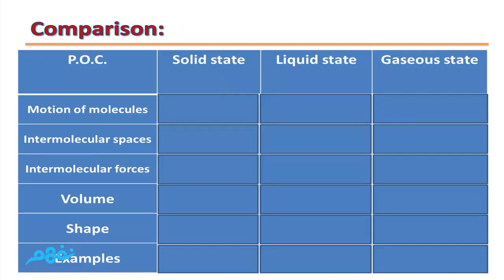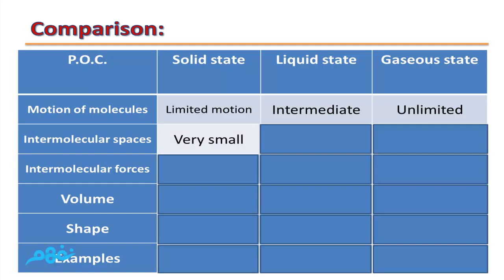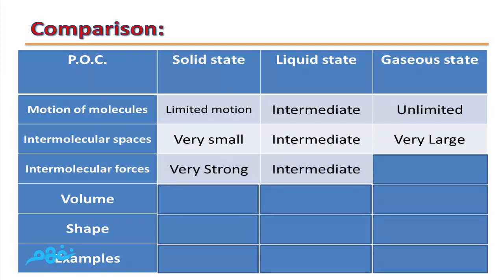Let's compare between the three states of matter in a table. Motion of molecules in the solid state is very limited because the spaces are too small. In liquids it is intermediate. In gases, motion is unlimited. Intermolecular spaces are very narrow in the solid state, intermediate in the liquid state. Intermolecular forces are very strong in the solid state, intermediate in the liquid state, and very weak between molecules of gases.